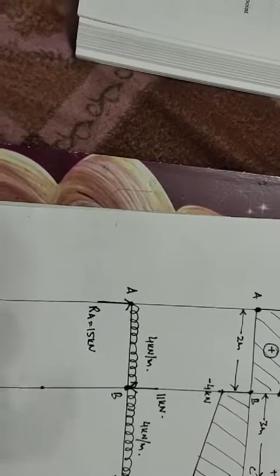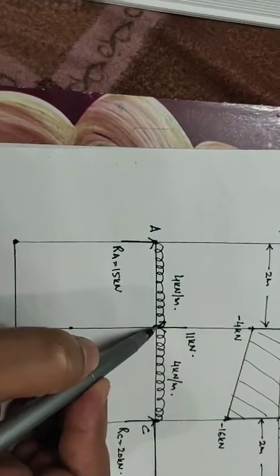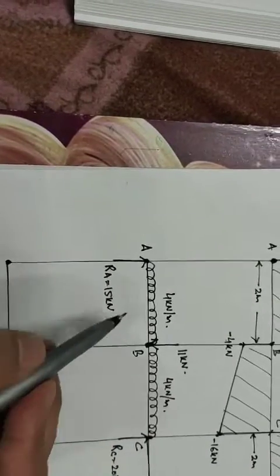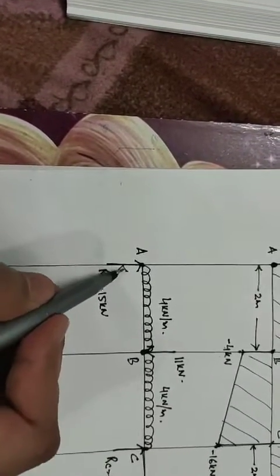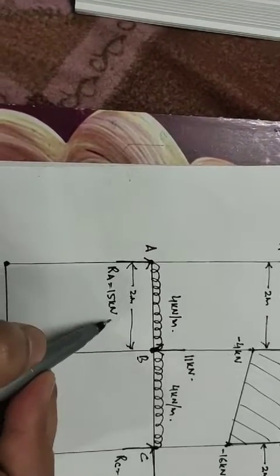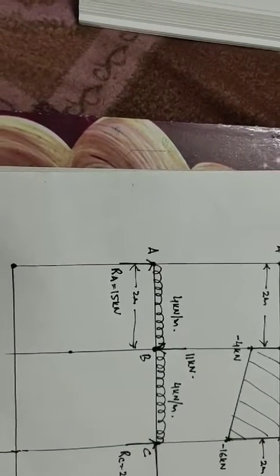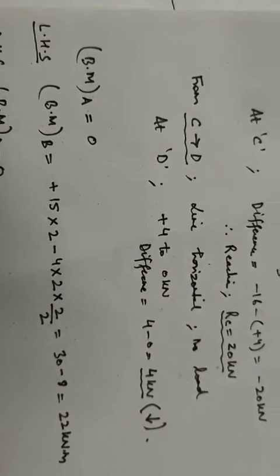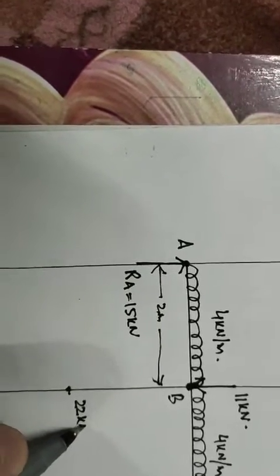This completes the loading diagram. Now we will find the bending moment at various points. Bending moment at point A is 0. Bending moment at point B, considering the left hand side: 15 into 2 minus 4 into 2 into 1 equals 22 kilo Newton meter.